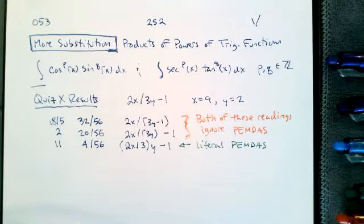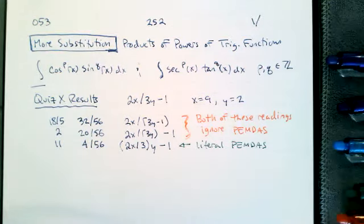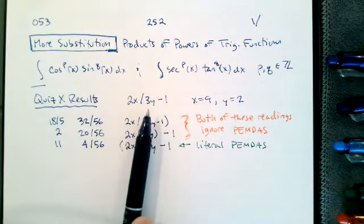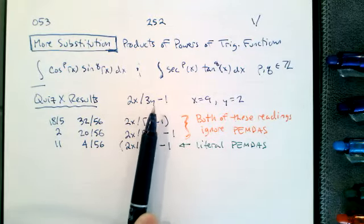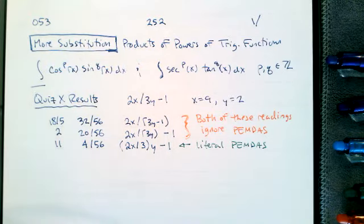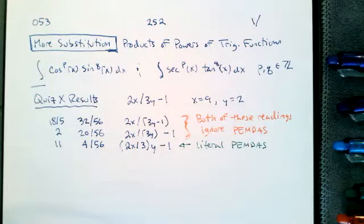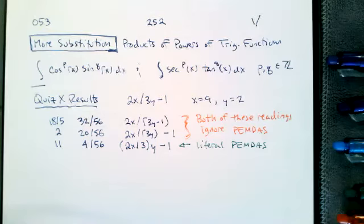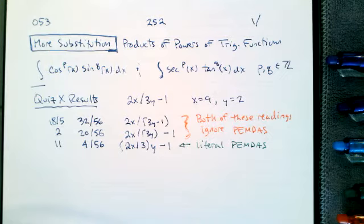52 out of 56 of you did what we all do: if you have x over 3y, you mash those together. The 3 and the Y go together. No one interprets 2x over 3y as anything but 2x on top and 3y on the bottom. If you try to claim that follows PEMDAS, it does not — it follows a different tradition, it follows what we mostly do anyway.